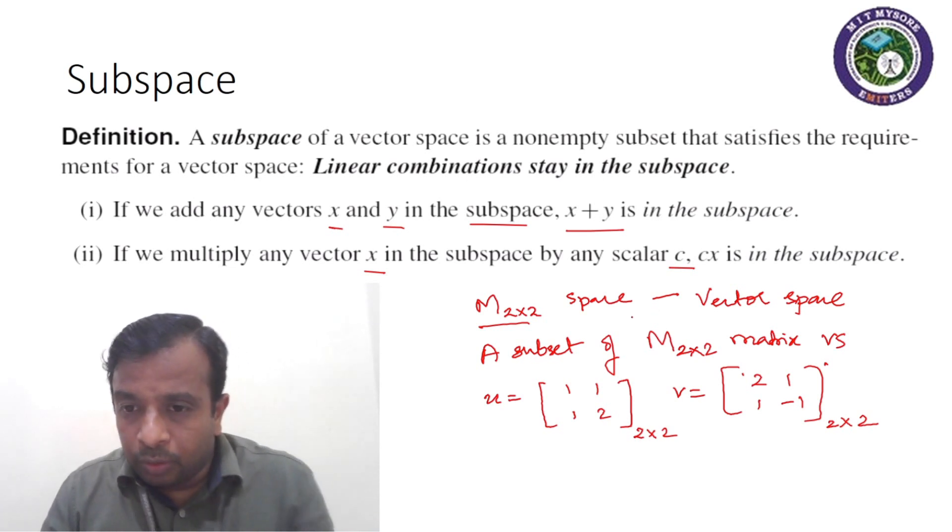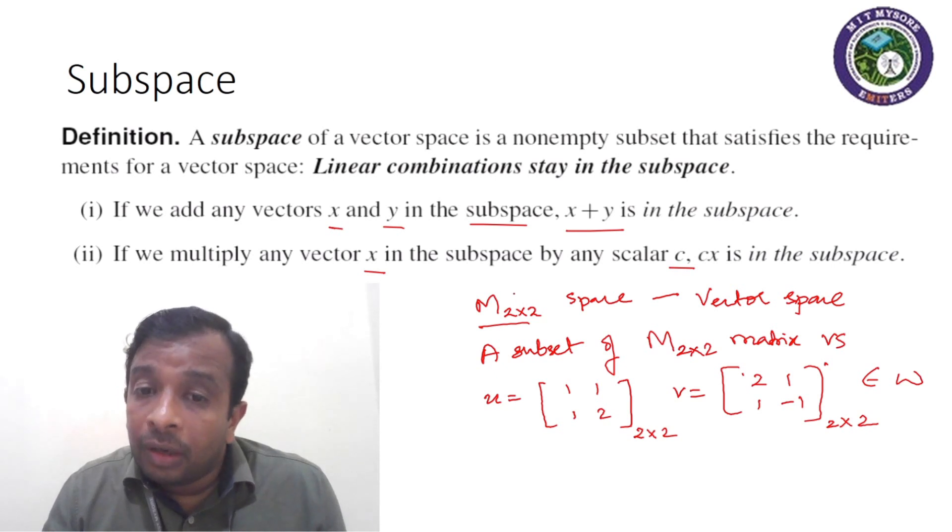Hope you are able to correlate that U and V are part of subset W, if I define it as W, a subset of M2 cross 2 space. Now let me see if U plus V falls in that same subset.